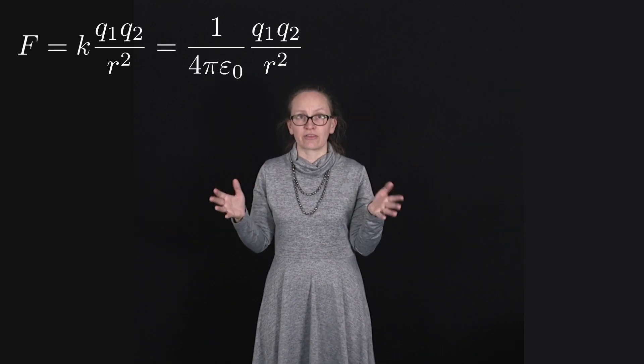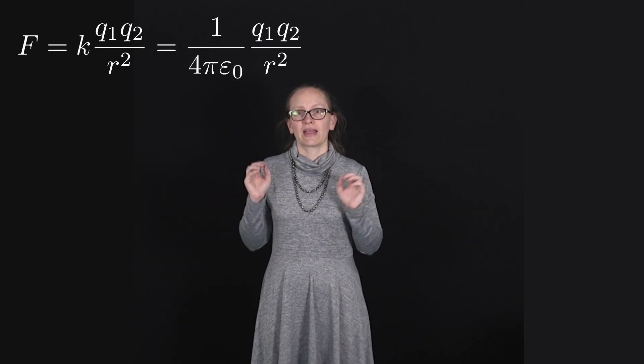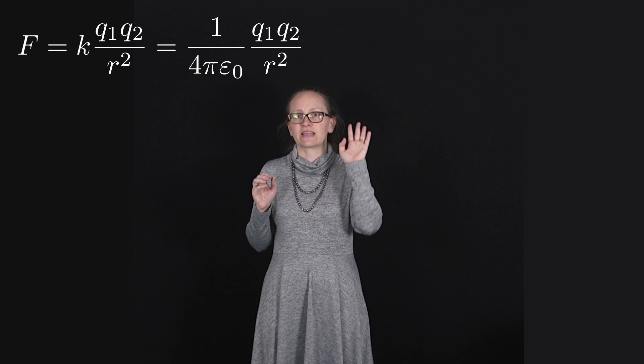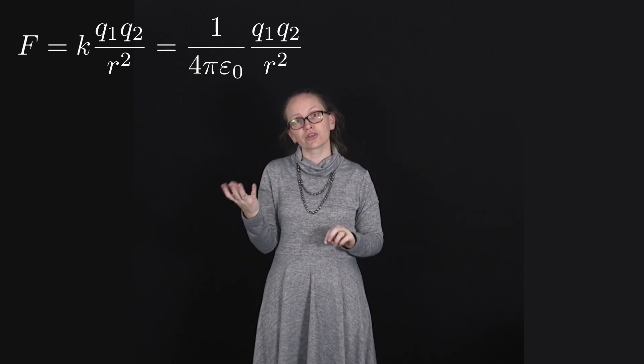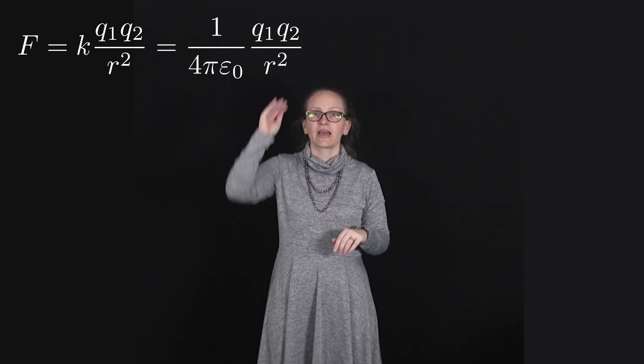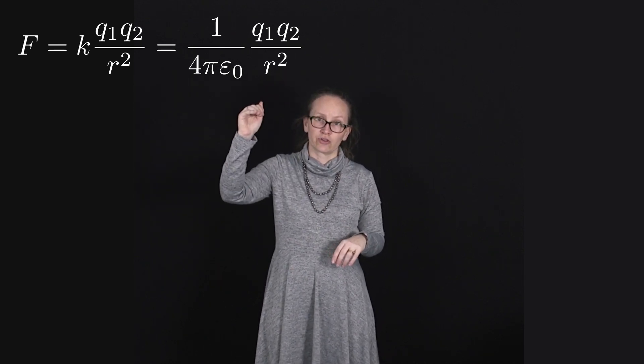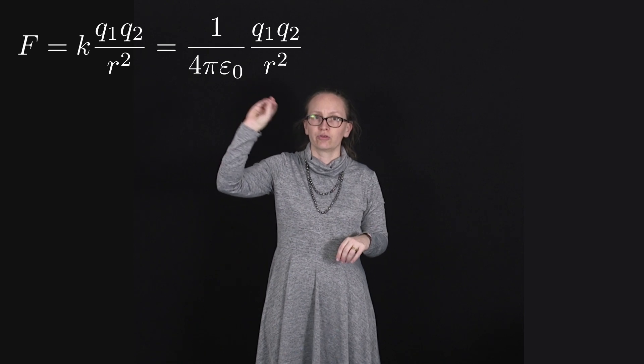So this is now known as Coulomb's law and it can be written as F equals k q1 q2 on R squared and you'll often also see this written in this course as 1 over 4 pi epsilon naught q1 q2 on R squared.